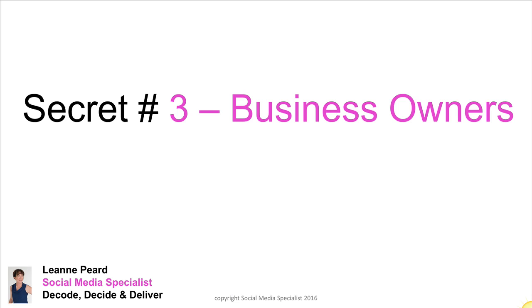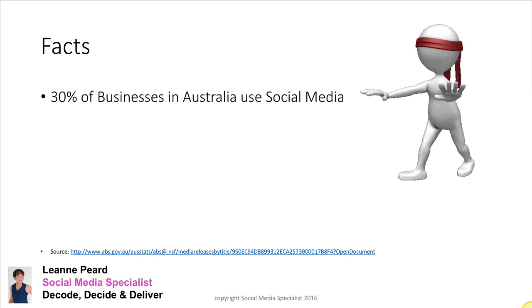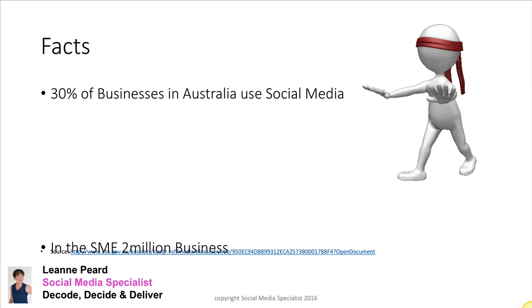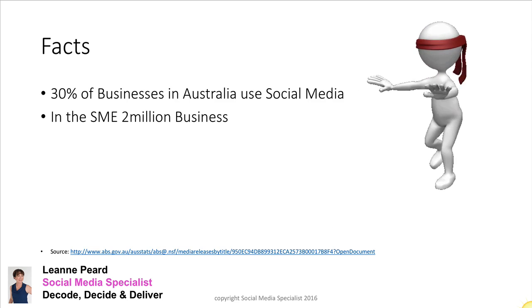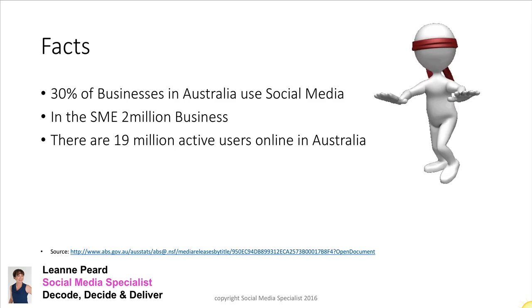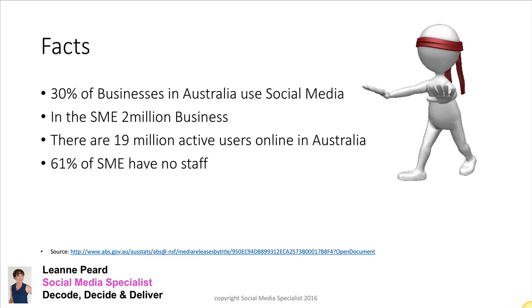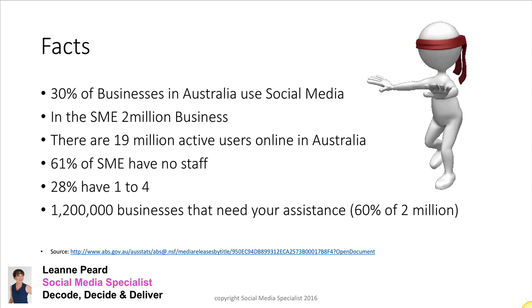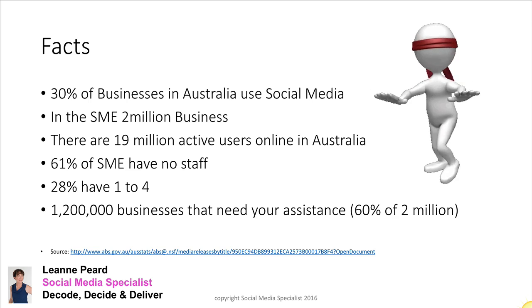Secret number three — let's look at a few facts about business owners. Thirty percent of Australian businesses use social media. In Australia there are 2 million businesses and 19 million active users online. Sixty-one percent of small-to-medium enterprises have no staff, and 28% have between 1 and 4 staff. That means there are 1.2 million businesses — 60% of 2 million — that need your assistance.